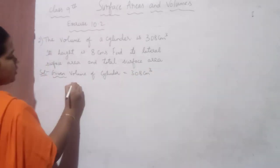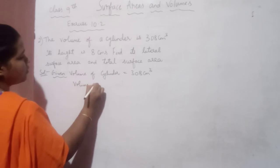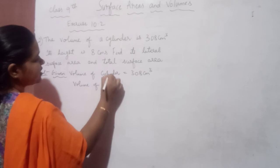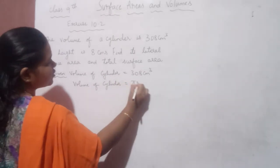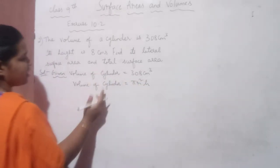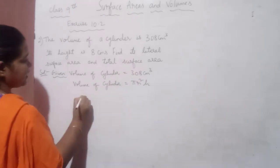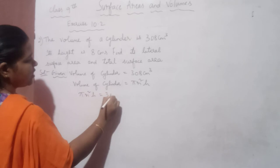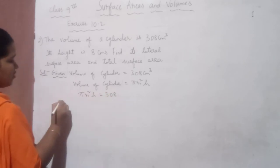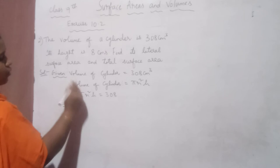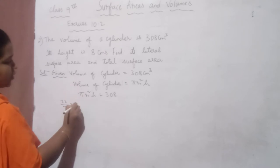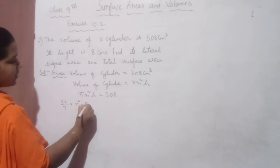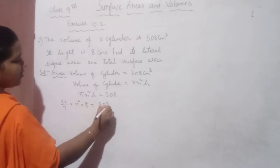We know the formula to find the volume of a cylinder: V = πR²H. Equating both sides, we get πR²H = 308. We know the value of pi is 22/7. So substituting: (22/7) × R² × 8 = 308.